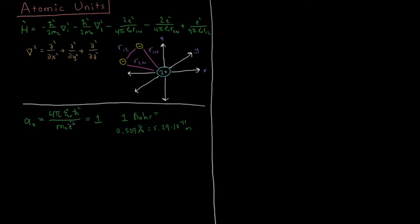In energy what we're going to use is twice the energy of the ground state of the hydrogen atom. So this is going to be mass of the electron times charge of the electron to the fourth over 16 pi squared epsilon naught squared times h bar squared. And this is going to be set equal to 1.